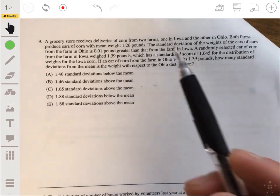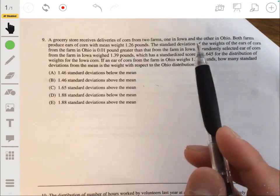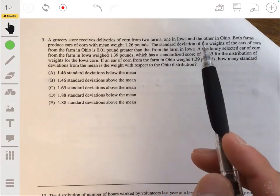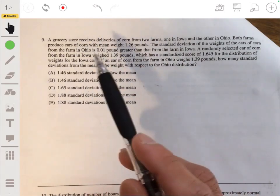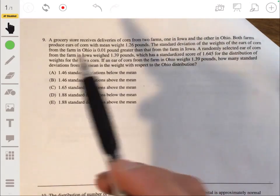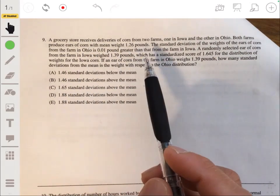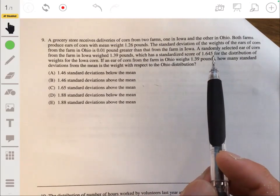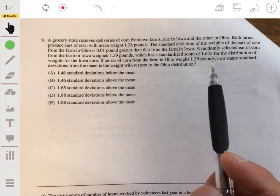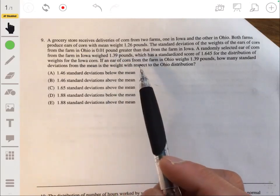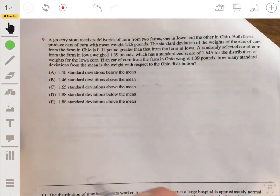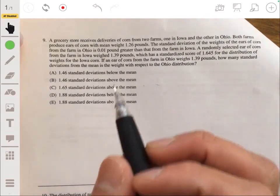All right, nine. A grocery store receives deliveries of corn from two farms, one in Iowa and the other in Ohio. Both farms produce ears of corn with mean weight 1.26 pounds. Standard deviation of the weights of the ears of corn from the farm in Ohio is 0.01 pounds greater than that from the farm in Iowa. A randomly selected ear of corn from the farm in Iowa weighed 1.39 pounds, which has a standardized score of 1.645 for the distribution of weights for the Iowa corn. If an ear of corn from the farm in Ohio weighs 1.39 pounds, how many standard deviations from the mean is the weight with respect to the Ohio distribution?